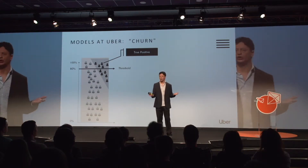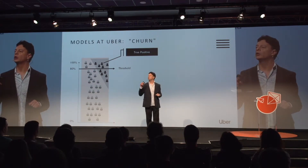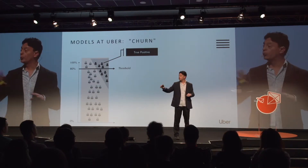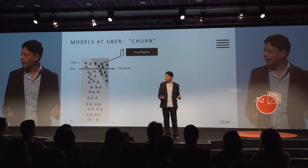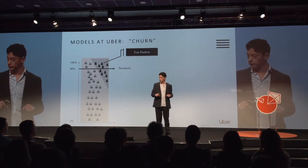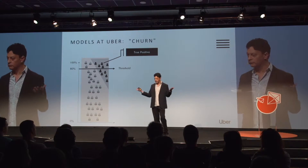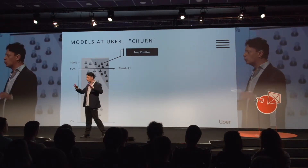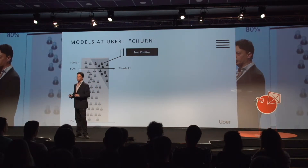Imagine for a second that the churn rate is 10%. If you are a marketer designing a campaign or a treatment to prevent churn, and you run a Facebook campaign with random sampling, that means for every hundred people you target, you catch 10 of the people you care about — 10% churn, simple as that. For every hundred impressions, you catch 10.